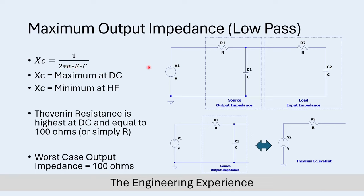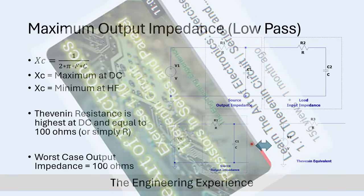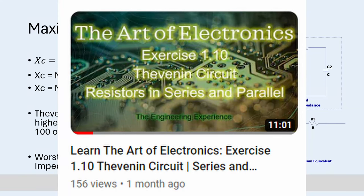Analyzing that equation, we can see the reactance is maximum at DC. When frequency F is 0, we get 1 divided by 0, so XC is infinite. As frequency increases, this term becomes larger, so we're dividing 1 by a larger number, meaning XC is at minimum for very high frequencies. To analyze this circuit, we first need to calculate the Thevenin equivalent circuit - please check out my other video on that topic.